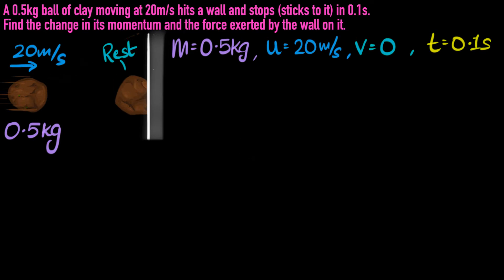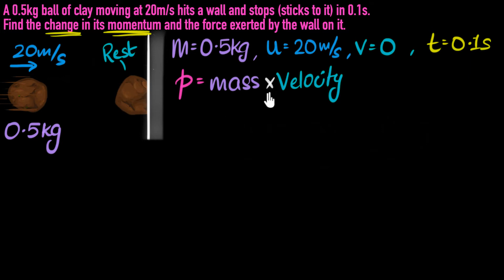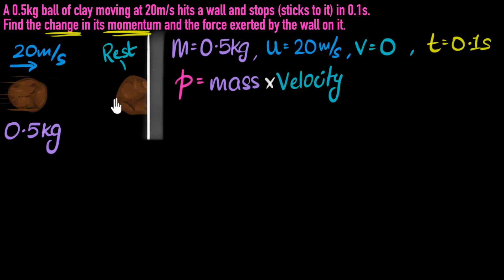Now let's think about what is asked. We need to find the change in momentum and calculate the force exerted. Momentum is the product of mass and velocity — you take the mass of an object, multiply by its velocity, and that number is the momentum. When the clay hits the wall, its velocity changes from 20 to zero, so its momentum must also change. We need to calculate how much that momentum has changed.